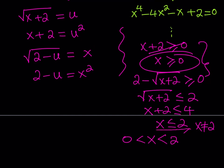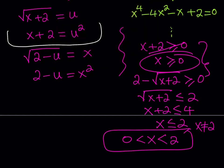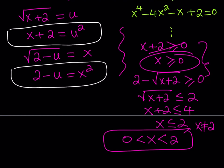Putting it all together, our condition is that x is strictly between 0 and 2 — not inclusive. Whatever solutions we get, we must verify they satisfy this inequality.